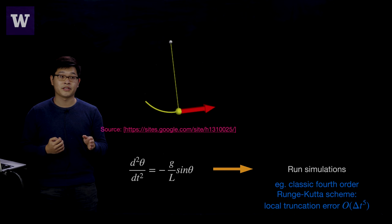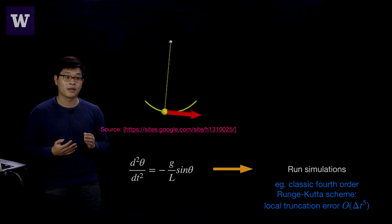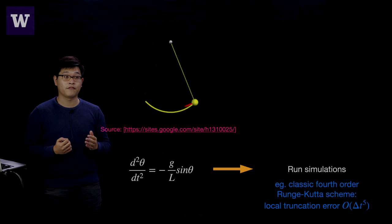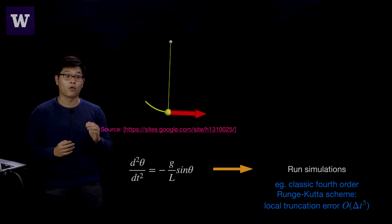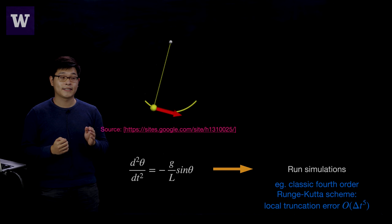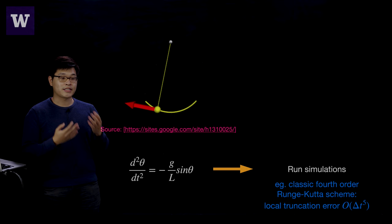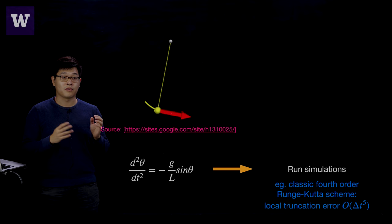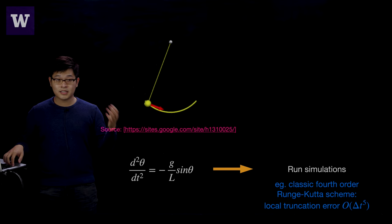One of the most popular time-stepping schemes is the fourth-order Runge-Kutta scheme, which has a local truncation error of O(dt^5). It is called fourth-order because the global error is O(dt^4). However, each simulation step introduces some small error, and although the error is small if you choose delta-t to be very small, these errors will inevitably accumulate as you run the simulation.